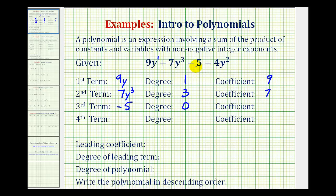Another way to think of this is we could write negative five as negative five y to the zero. Because y to the zero would be equal to one. And the exponent on the variable factor would be zero. And our coefficient is negative five.